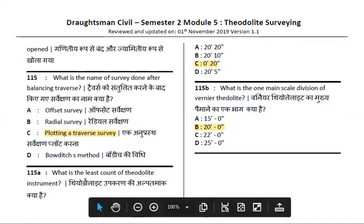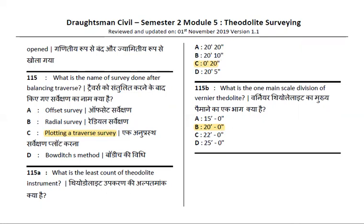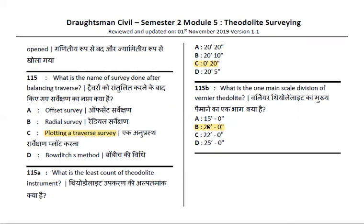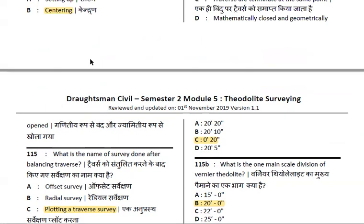What is the least count of the theodolite? This is the same exam question repeated. The answer is 20 seconds. One main scale division of the vernier theodolite — one division of the vernier theodolite — equals 20 seconds. The least count is 20 seconds. Note: this is in seconds, not minutes.